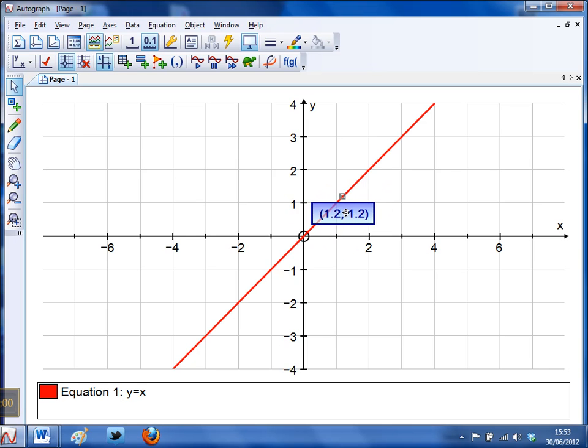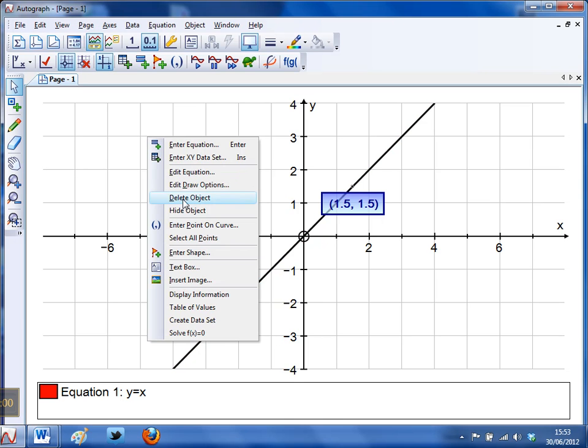But what I'm going to do now is something a little bit sneaky. I'm going to just click randomly out here to deselect everything and then I'm going to select the line. I'm going to right click and I'm going to click on hide object, so click on hide object.